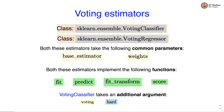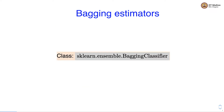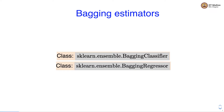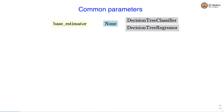Voting classifier takes an additional argument called voting — either hard voting or soft voting. Then there are two bagging estimators: bagging classifier and bagging regressor. They are also implemented as part of the sklearn.ensemble module. They take the following common parameters: base estimator, which by default is none. In classification, the default base estimator is a decision tree classifier, while in regression it is a decision tree regressor.